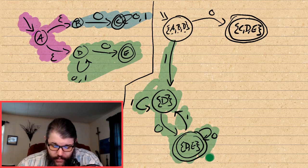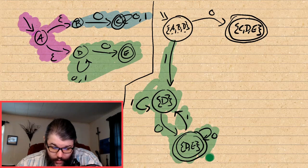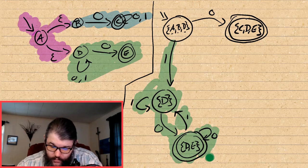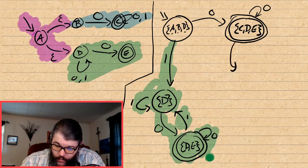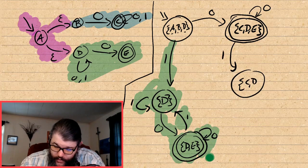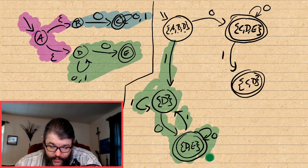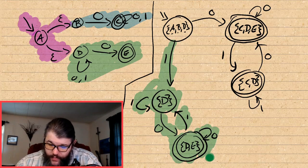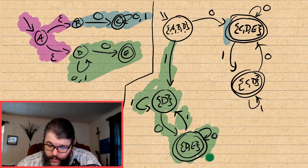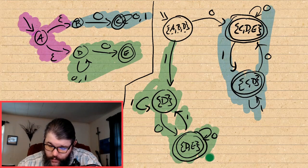Let's finish the top path — state {C, D, E}. On a 0: C goes back to C, D goes to D or E, and E falls off — so on a 0 we go back to {C, D, E}. On a 1: C goes to C, D goes to D — so on a 1 we go to state {C, D}, which is an accept state. For state {C, D} on a 0, D goes to D and E, so we get {C, D, E}. On a 1, they go back to themselves, giving us {C, D}. These states are potentially collapsible since they're both accept states, but we're not doing a minimization here.